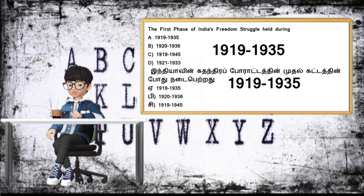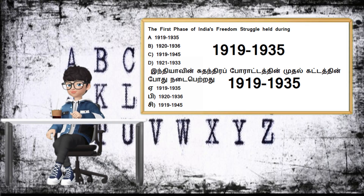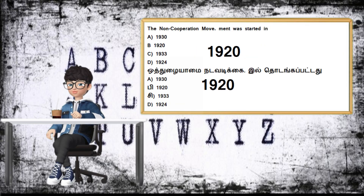1919 to 1935 — India's freedom struggle held during. The second phase of India's freedom struggle held during. The third phase of India's freedom struggle held during.